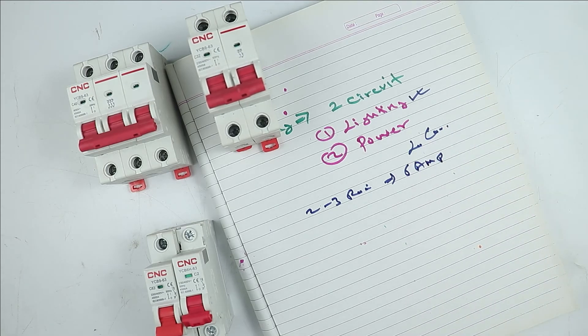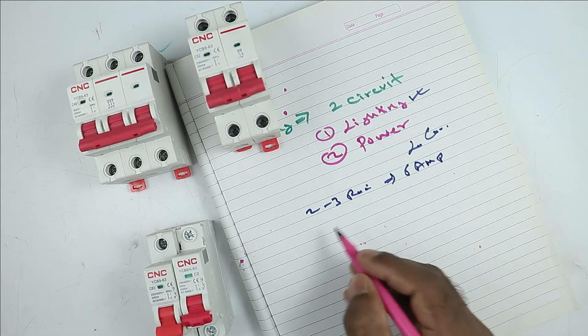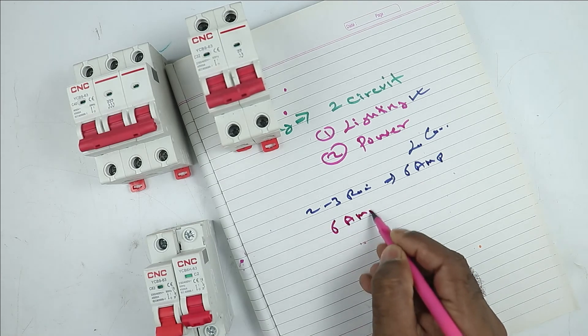This means the power supply which goes to lighting circuit, in this you have to connect 6 ampere MCB.